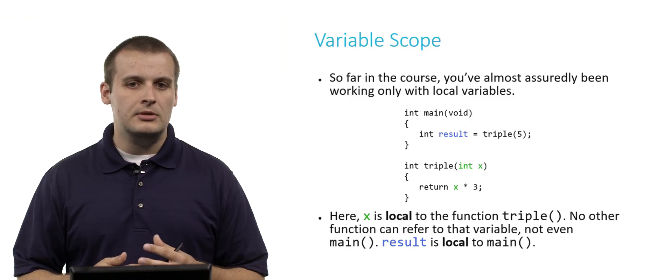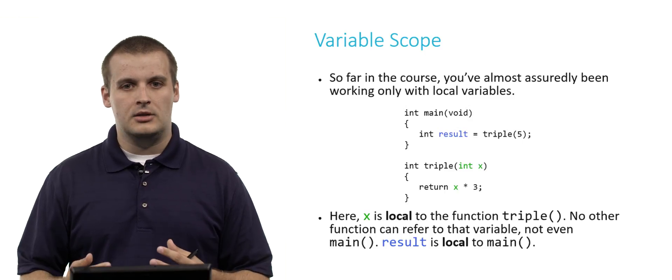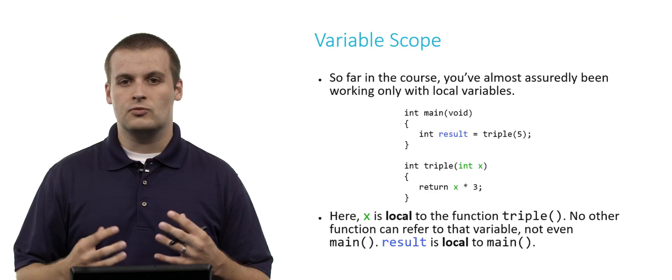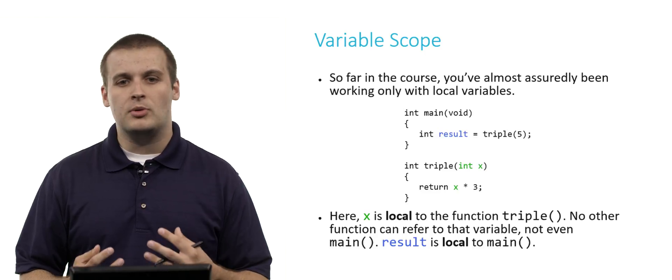Similarly, result, which I've colored blue, is local only to main. Only main knows what the variable result is. Triple cannot use it.